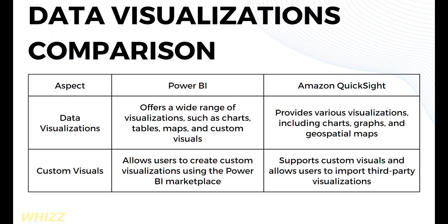Moving on to data visualizations comparison: Power BI offers a wide range of visualizations such as charts, tables, maps, and custom visuals. While Amazon QuickSight provides various visualizations including charts, graphs, and geospatial maps. In terms of custom visuals, Power BI allows users to create custom visualizations using the Power BI marketplace, while Amazon QuickSight supports custom visuals and allows users to import third-party visualizations.